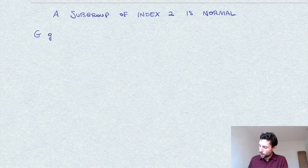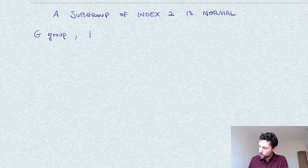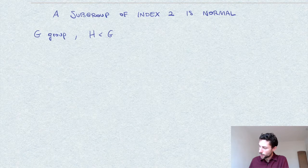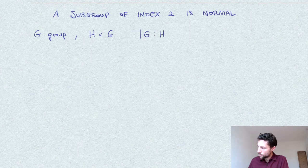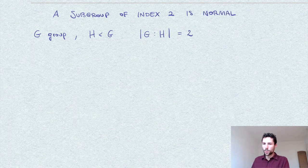So here is the setting. We have, say, a group G and a subgroup, let's call it H. And this subgroup has index 2, so the index of H in G is equal to 2.